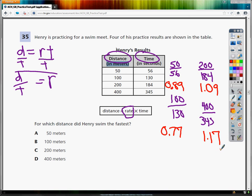Now I want to know which he swam the fastest. This would be the rate in meters per second. It looks like in the 400, Henry was going 1.17 meters per second. So the answer to number 35 is D - he went the fastest in this race.